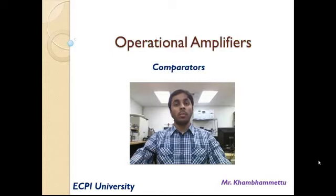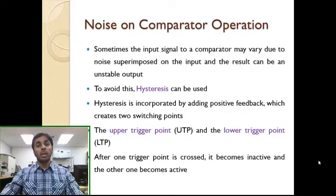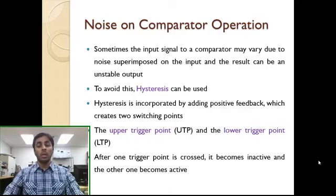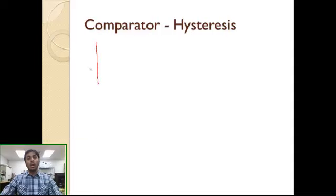Today we will talk about how a comparator can be used to remove noise using positive feedback along with hysteresis. No matter what, all circuits are going to be affected by noise. We focus on comparators especially because they compare signals — if the input signal fluctuates around the reference signal, the very high open-loop gain of the op-amp causes it to change its output states continuously.